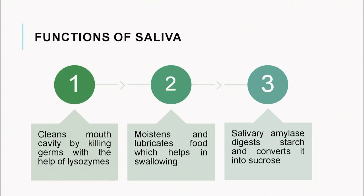What are the functions of saliva? Saliva cleans the mouth cavity by killing germs with the help of lysozymes. It also moistens and lubricates food, which helps in swallowing — otherwise if the food is dry we would not be able to swallow it. Third, saliva produces the enzyme salivary amylase, which digests starch and converts it into sucrose. Sucrose is a disaccharide and starch is a polysaccharide — the big molecule starch is broken down into the smaller molecule sucrose by salivary amylase.